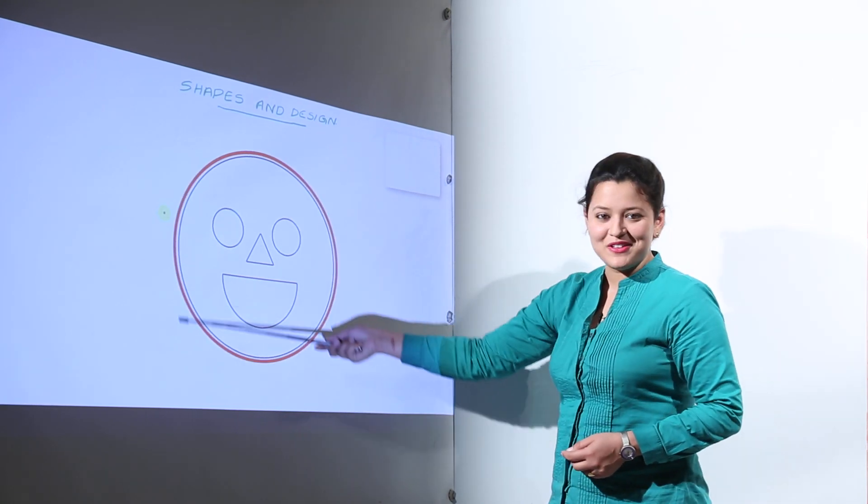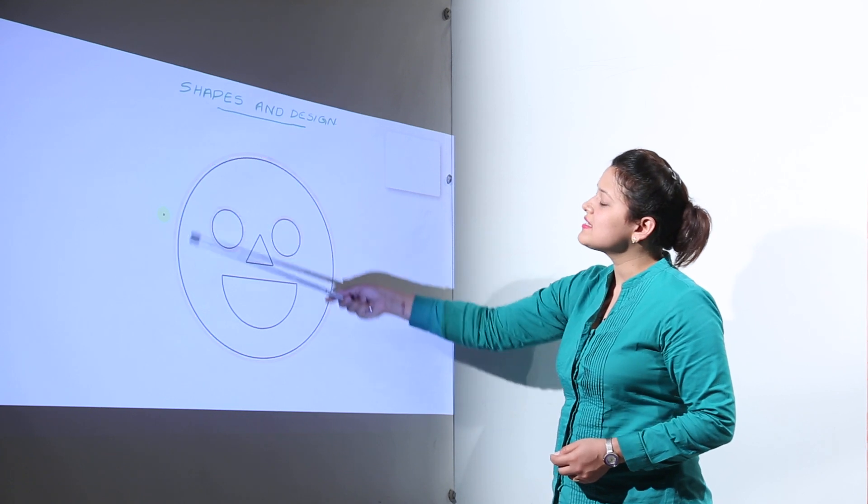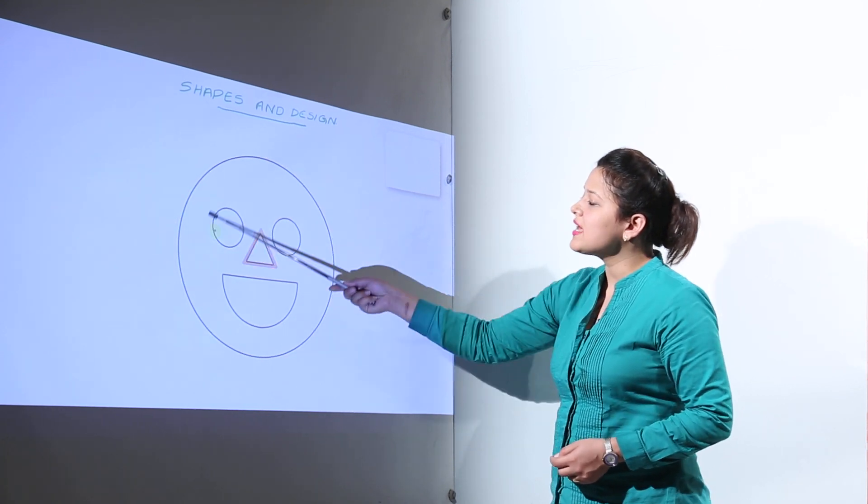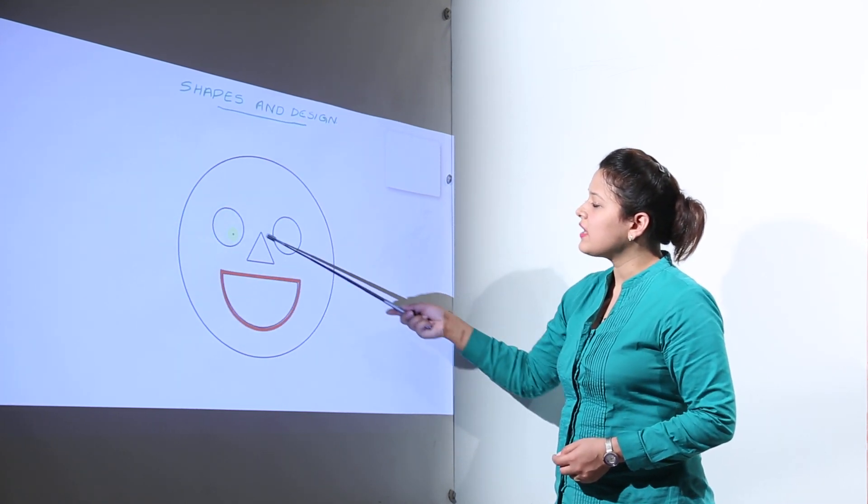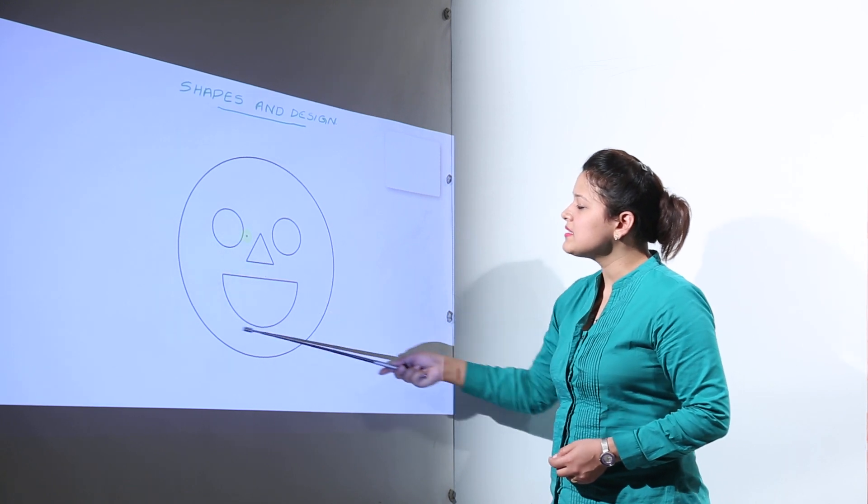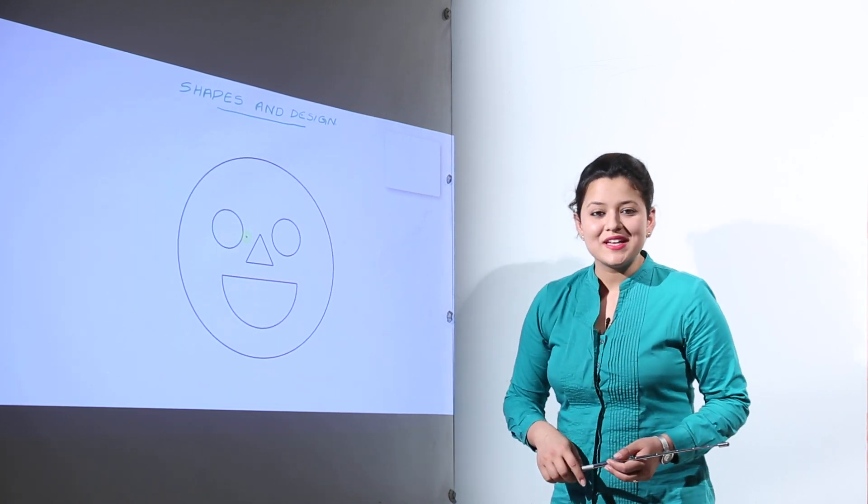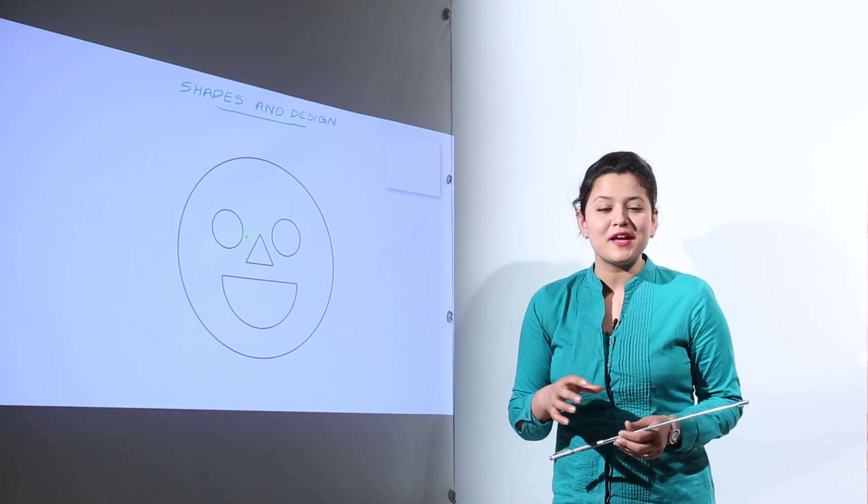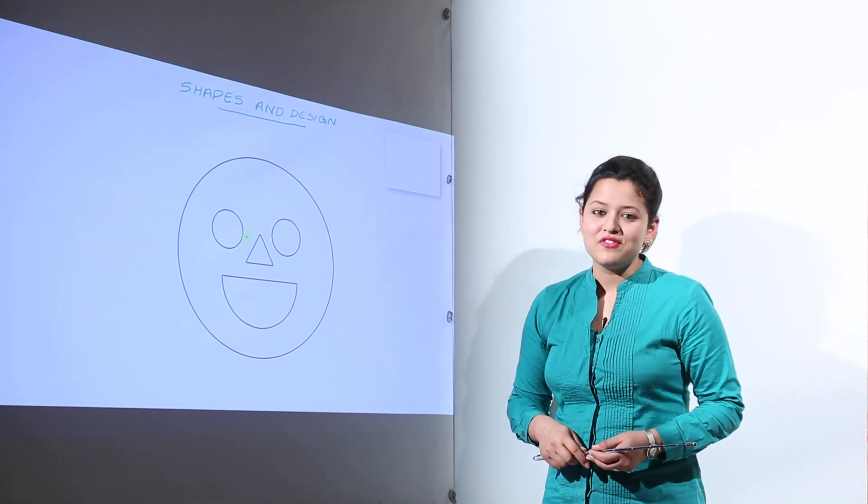Now here you can see a smiley face. Now smiley face has a circle with two eyes as the circle. Here triangle as the nose and this semi circle as the mouth. So we can see that different shapes are combined together to make this smiley face.